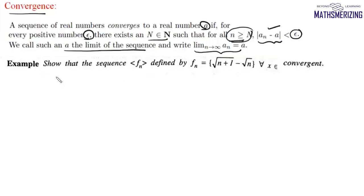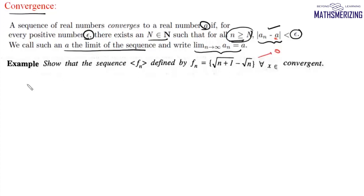Let us take up an example. The question is: show that the sequence fₙ defined by fₙ = √(n+1) − √n is convergent. One limitation of this standard method is that we must know the value of a in order to check convergence using the epsilon method, and it is not given in the question.